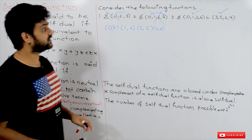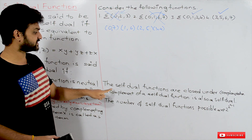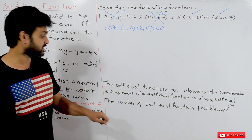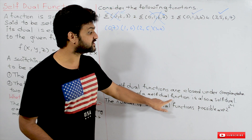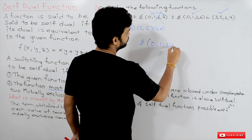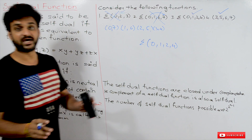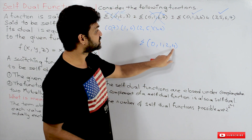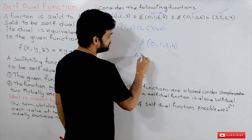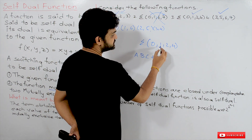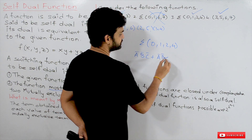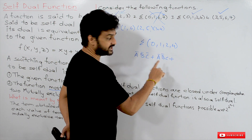An important property: self-dual functions are closed under complementation. That means the complement of a self-dual function is also a self-dual function. For example, take the self-dual function Σ(0, 1, 2, 4). The complement of this function: minterm 0 is A'B'C', minterm 1 is A'B'C, minterm 2 is A'BC', minterm 4 is AB'C'.